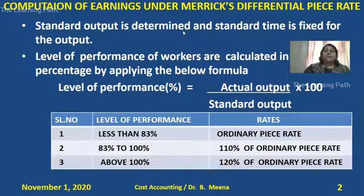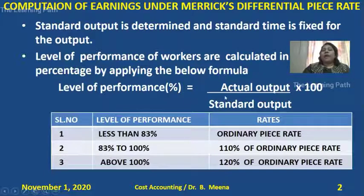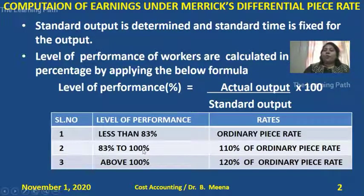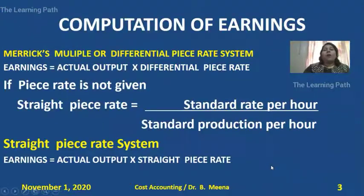As per the system, we calculate the standard output determined by the company based on standard time. We then compare the standard output with actual output using the formula: actual output divided by standard output, into 100. Once we know the percentage of performance for each worker, we apply the three rules: 1–82% gets ordinary piece rate; 83–100% gets 110% of piece rate; above 100% gets 120% of piece rate.